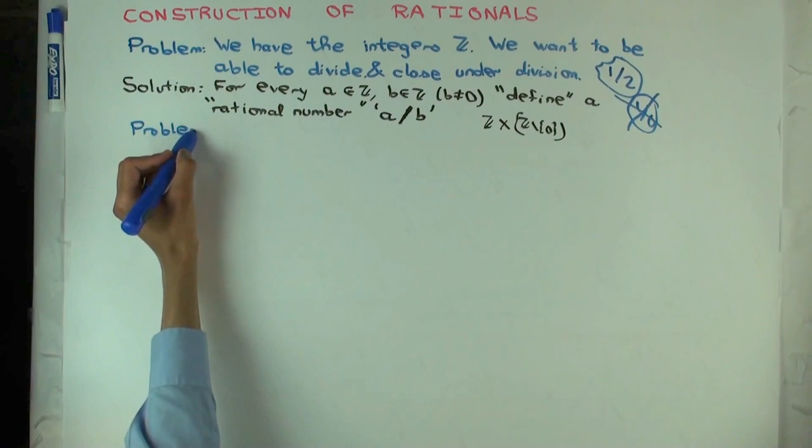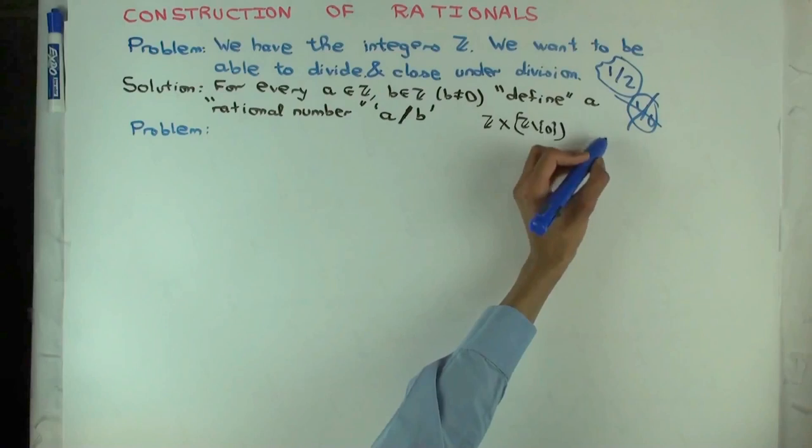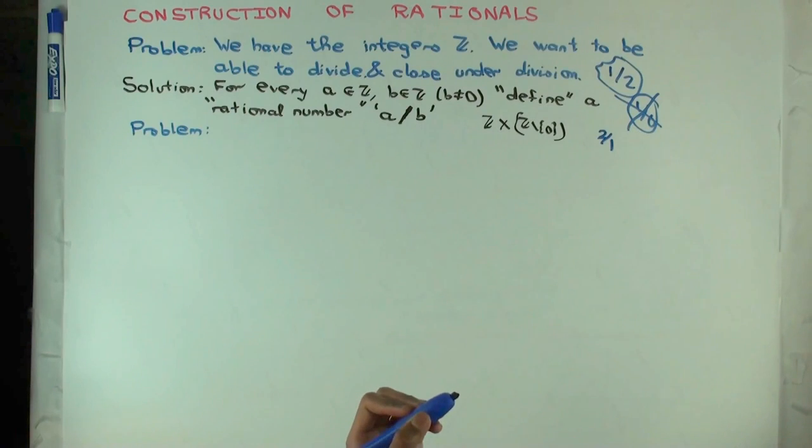For everything here and everything here you've got a so-called rational number. Now what's the problem with this solution? Is this the set of rational numbers? Do you still think so? Well it's sort of the rational numbers but there's a little issue which is that you could have two different things here which are actually describing the same rational number.